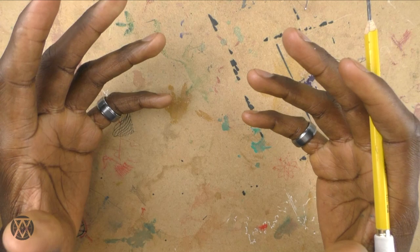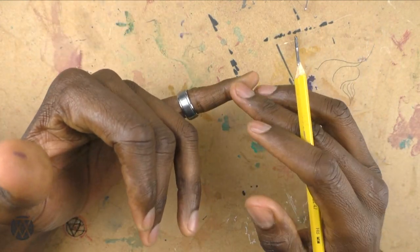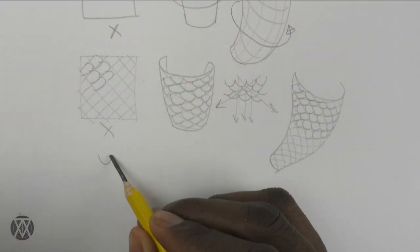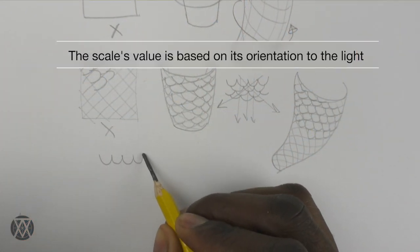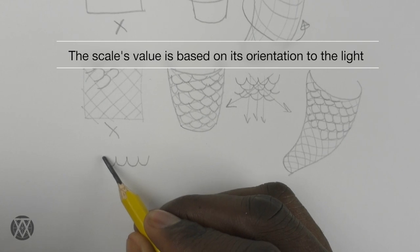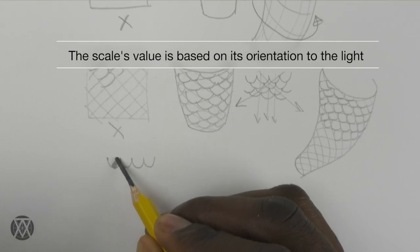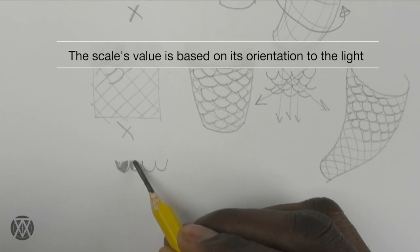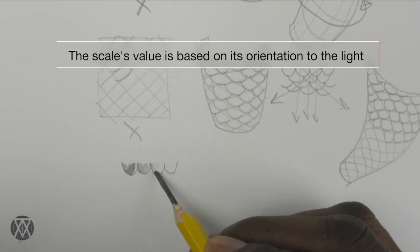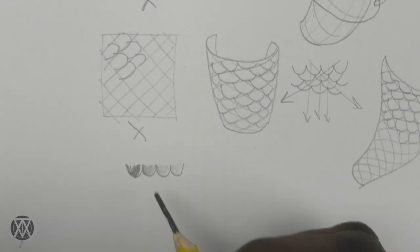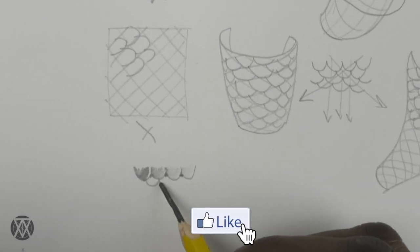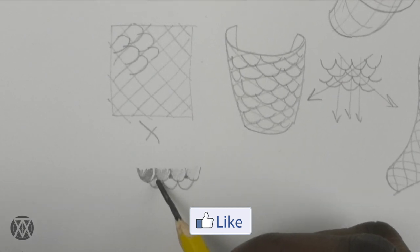Shading scales can be tricky. First, remember that scales are overlapping forms. Whenever you have overlapping forms, generally the form being overlapped will have some degree of shadow. For scales, it's important to show some indication of shadow where scales are being overlapped and where neighboring scales meet. This will add dimension to your scales.